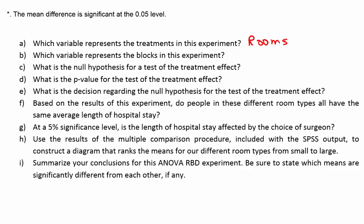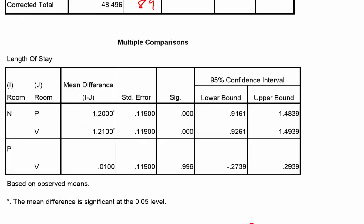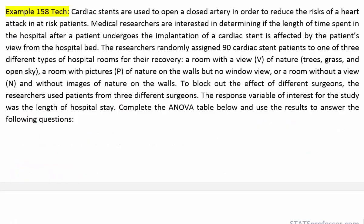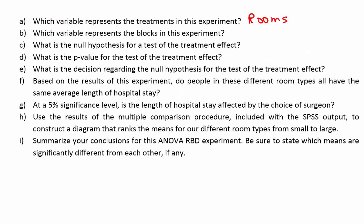They didn't really care about the surgeons. The problem stated that they were blocking out the surgeons. Notice how it said: 'To block out the effect of different surgeons, the researchers used patients from three different surgeons.' So we know the surgeons are the blocks. Which variable represents the blocks? As we just mentioned, it's the surgeons.